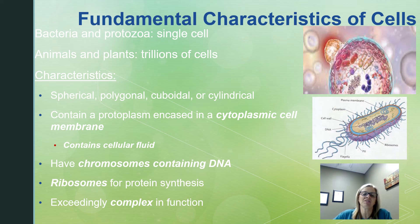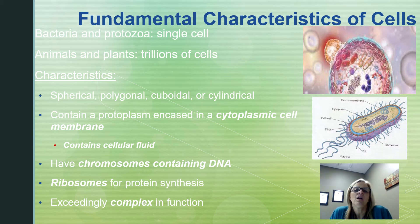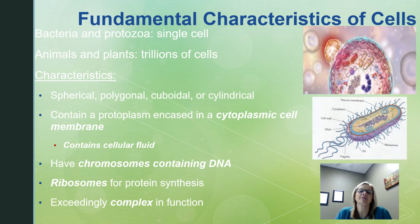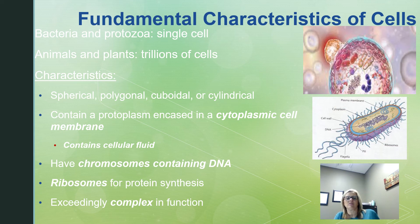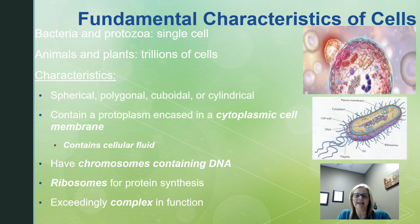What are some of the characteristics of cells? The bodies of some living things like bacteria or protozoa are formed from one single cell, while more complex organisms like plants and animals are formed from trillions of cells — a human being has about 70 trillion cells. Some characteristics of cells include shape — spherical, polygonal, cuboidal, cylindrical — they contain a protoplasm encased in a cell membrane, have chromosomes containing DNA, and ribosomes for protein synthesis.